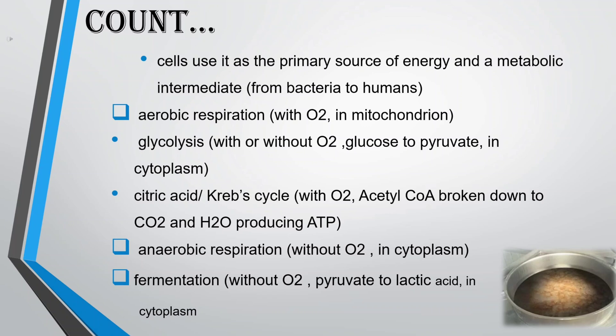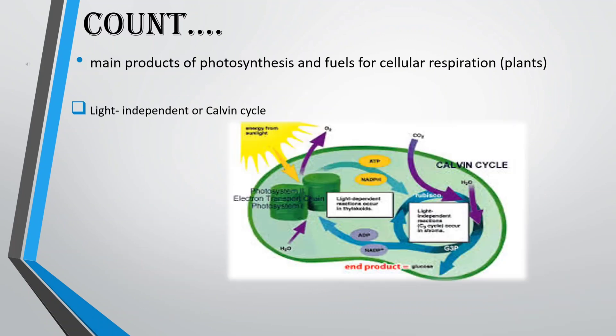Anaerobic respiration occurs without O2 in the cytoplasm via fermentation, converting pyruvate to lactic acid in the cytoplasm. Glucose is also a main product of photosynthesis — in plants, through the light-independent or Calvin cycle — and serves as fuel for cellular respiration.